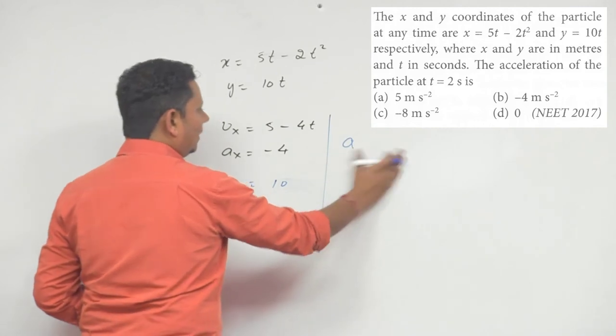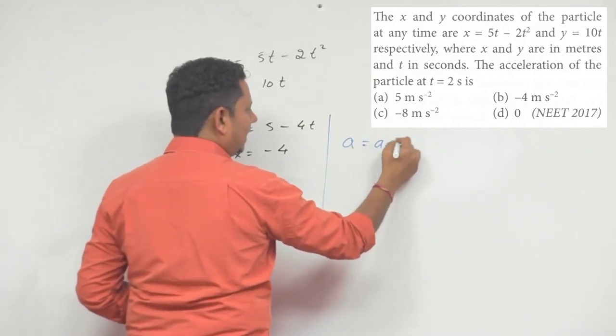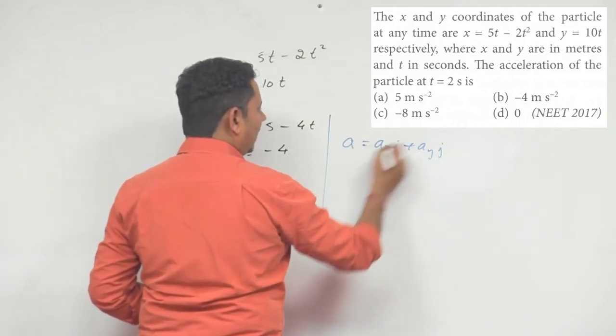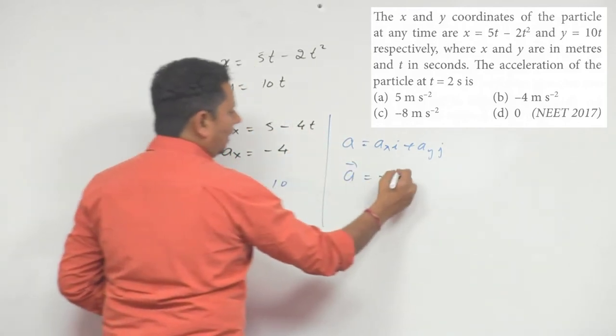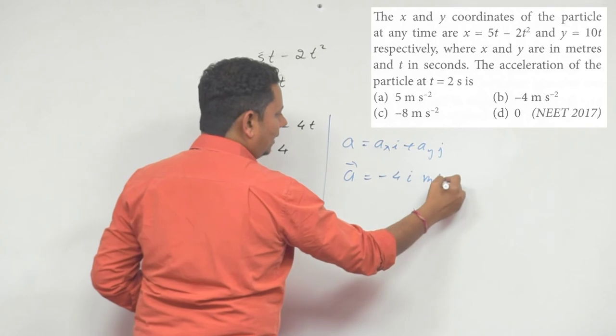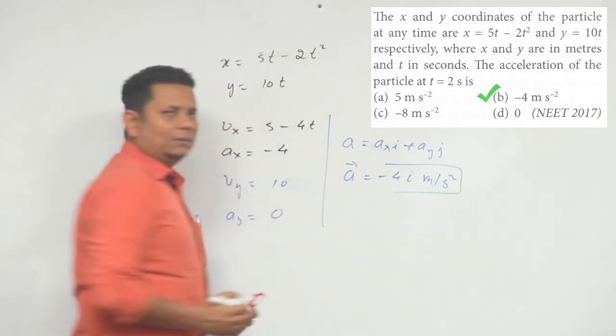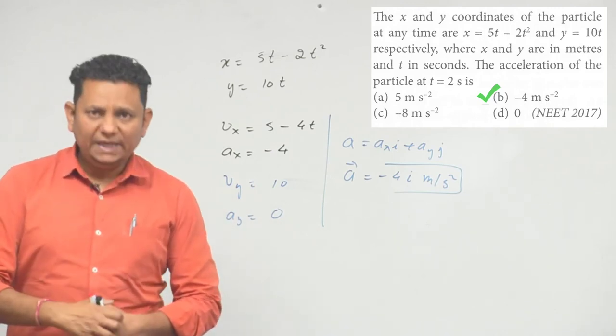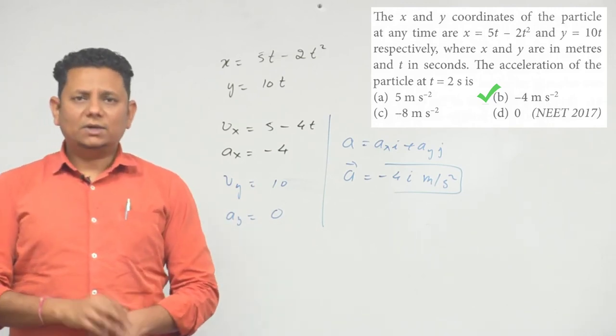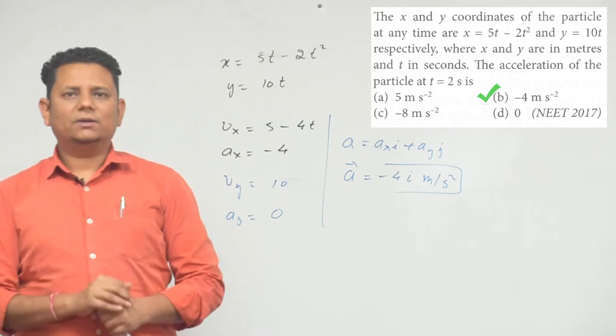Finally, the acceleration will be equal to ax i cap plus ay j cap. So, the net acceleration is equal to minus 4 i cap meter per second square. The acceleration is only in the x direction. So, based on this, we can say that option number b, minus 4 meter per second square, will be the correct choice for this particular problem.